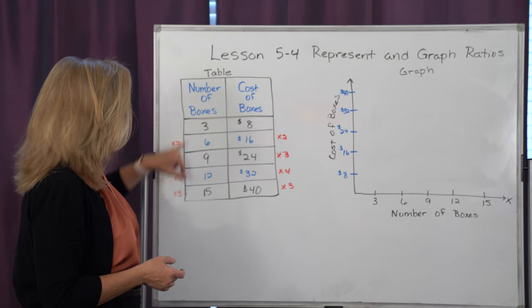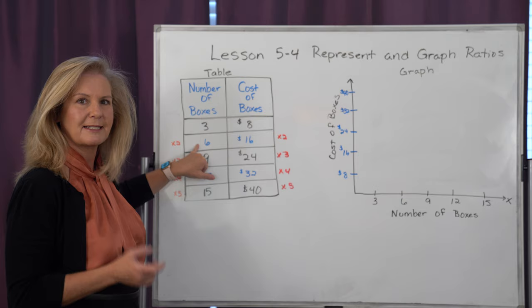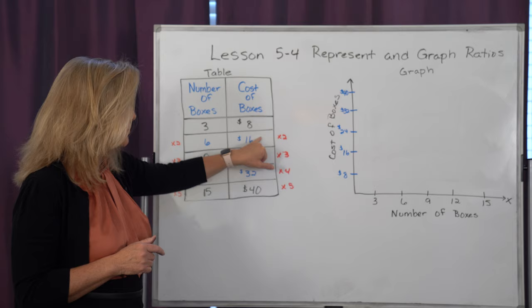So if I started with 3 boxes and multiplied it by 2, I now have 6 boxes. But I would have to also multiply my $8 by 2 to learn that those 6 boxes would then cost $16.